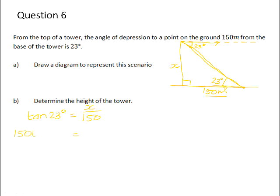Multiply both sides by 150, so it will be 150 tan 23 degrees is equal to X, and if we punch that into our calculator, we get 63.67 meters.